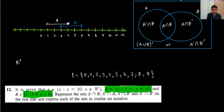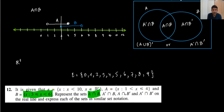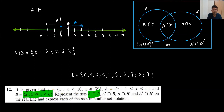Now we need to represent A intersection B on the number line. A intersection B is the area common to both A and B. Looking at the number line, the overlapping region is between 3 and 4. Both circles at those endpoints are filled. So A intersection B is X such that 3 ≤ X ≤ 4. This is part A done.